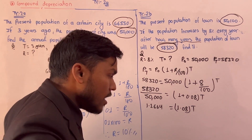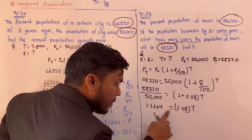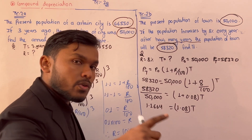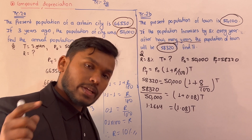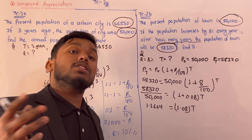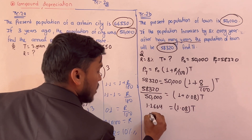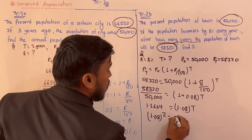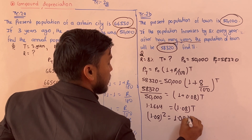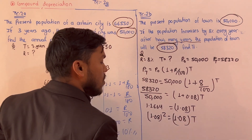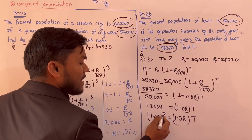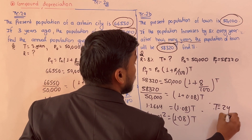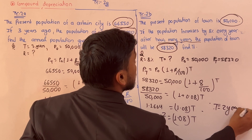So 1.08 times 1.08 equals 1.1664 — that is 1.08 to the power 2. Therefore t equals 2 years.